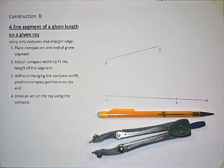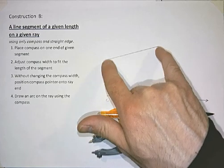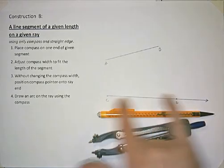Construction 8. This is being able to draw a line segment of a given length on a given ray. Basically, what we're doing is we're going to take the length of this line segment and we're going to copy that length on this ray here.